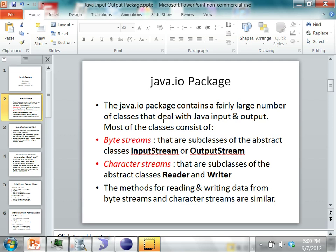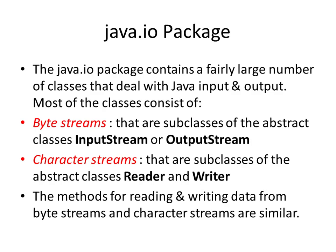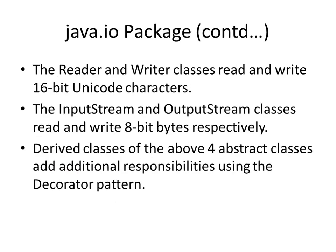With character streams, the bytes get interpreted as characters like ASCII characters or Unicode characters, depending on the character set that you are using. The methods for reading and writing data from byte streams and character streams are quite similar — most of them have the same names. The Reader and Writer classes read and write 16-bit Unicode characters.